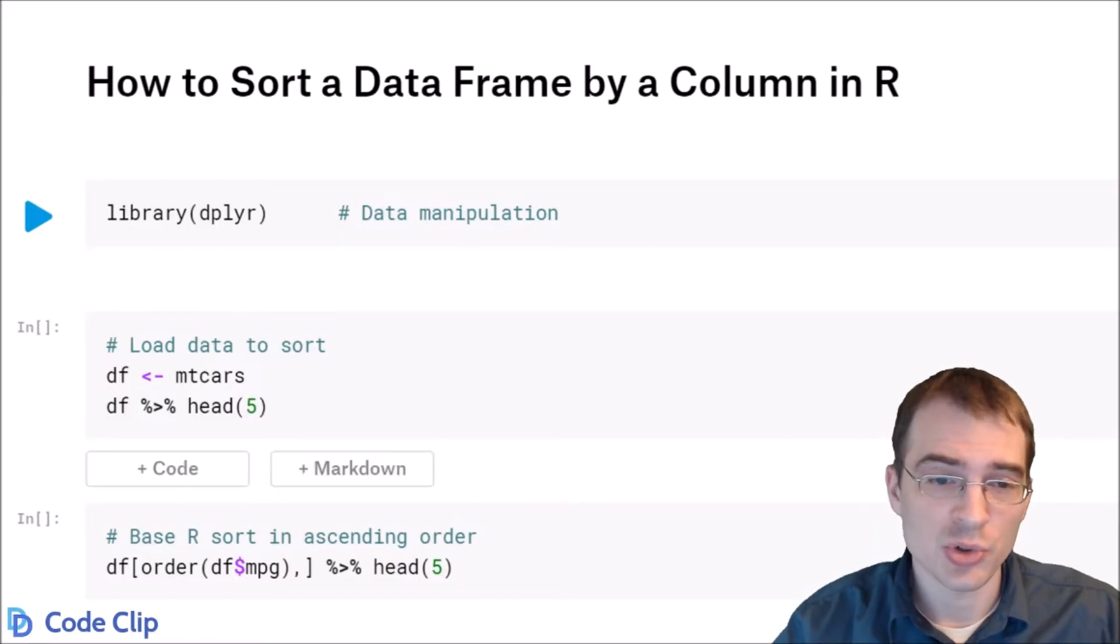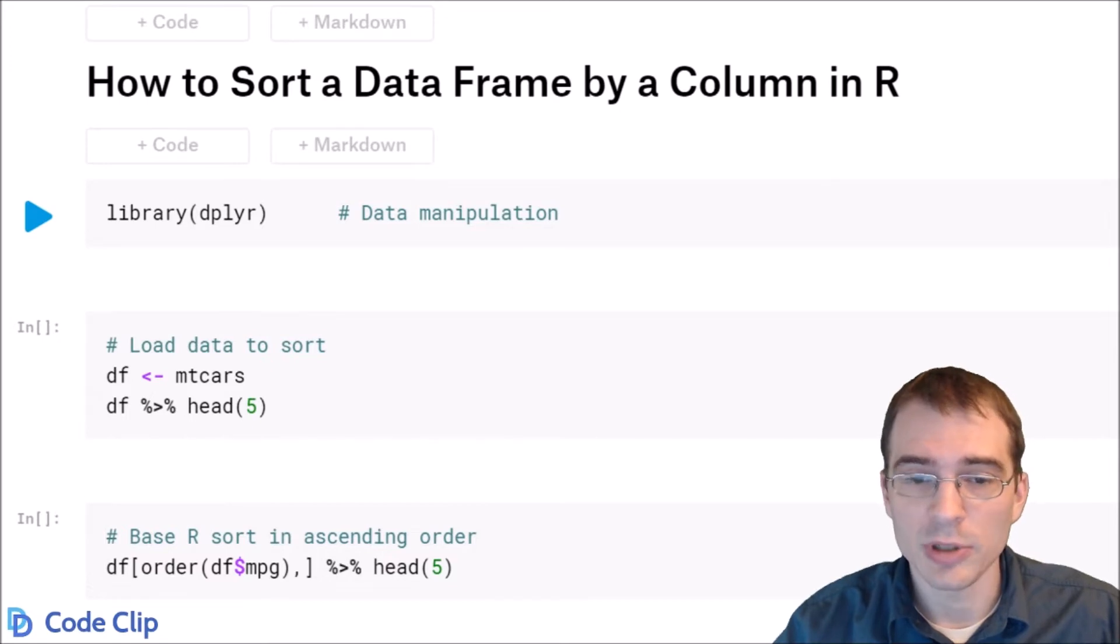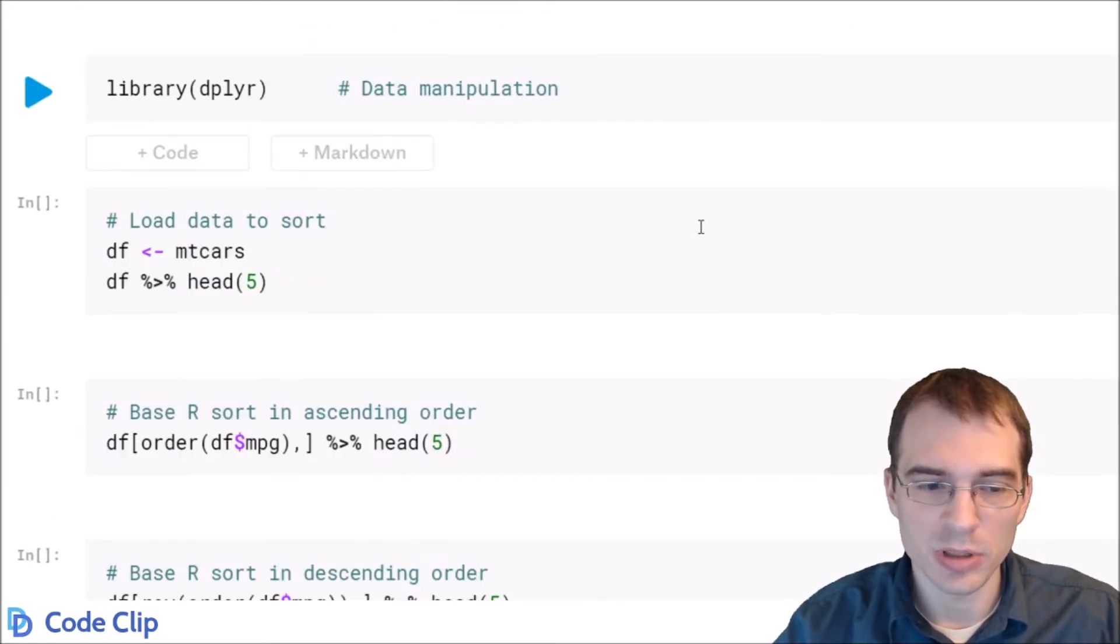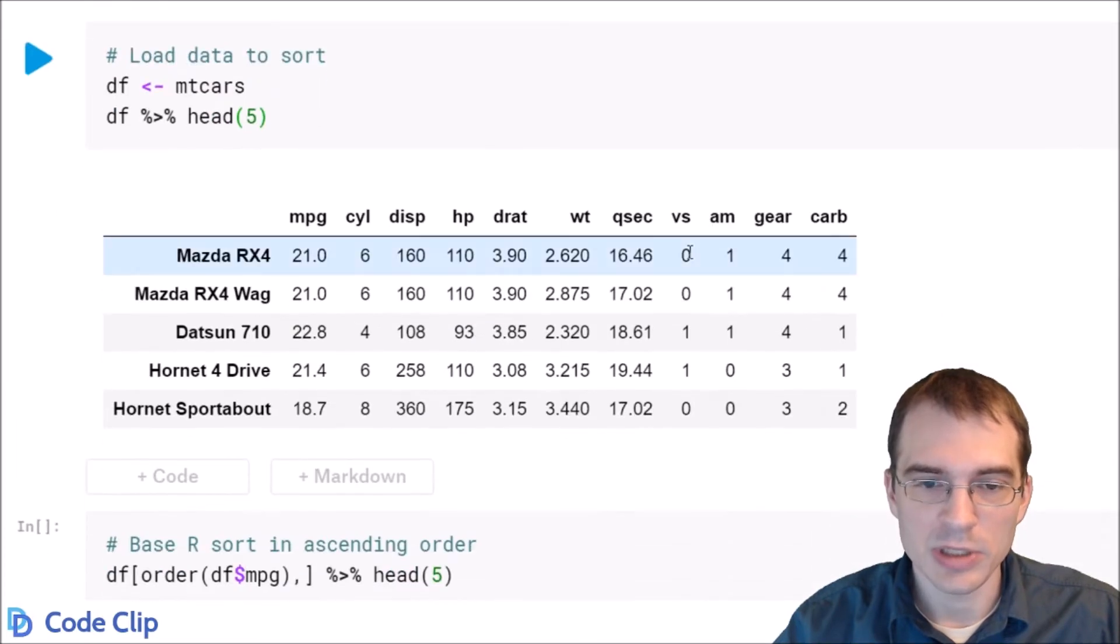In this video we're going to learn how to sort a data frame by a column in R. We're going to do it both in dplyr and using base R, so we'll load in dplyr. We're going to be sorting the mtcars dataset.